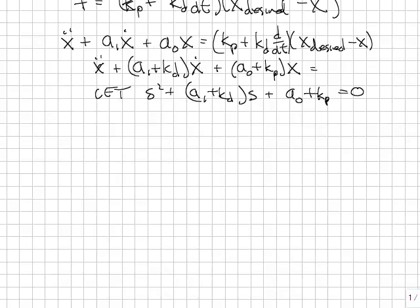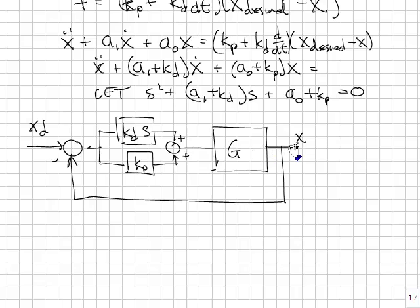In transfer function form, a proportional derivative controller looks like this. We have the plant g of s, measured output x, that's fed back through unity feedback compared with xd.